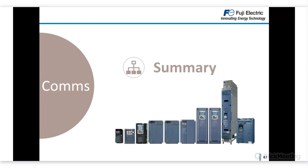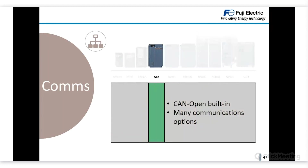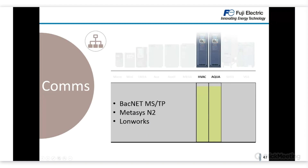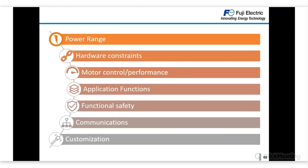As a summary for communications: ACE has CANopen built-in and many communication options, both serial and Ethernet-based. LM2A, as the specialist lift product, has CANopen built-in with the lift standard CANopen 417, and also CiA 303 or 304 serial communications. HVAC and Aqua have specific protocols for the HVAC and water markets — BACnet MSTP, Metasys N2, and LonWorks — in addition to all the others also available for MEGA, since most option cards are shared across the portfolio.